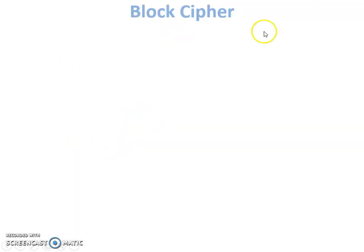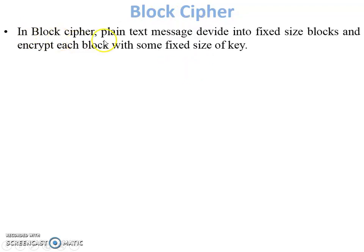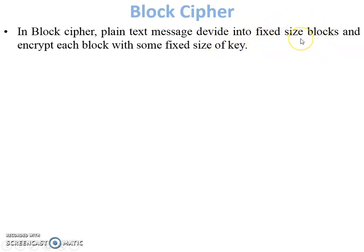Next is block cipher — again, the name suggests itself. The plain text is the input of the block and it generates a cipher text block. In block cipher, the plain text message is divided into fixed size blocks and each block is encrypted with a fixed size key. The output cipher text block size is the same as the input plain text block size.